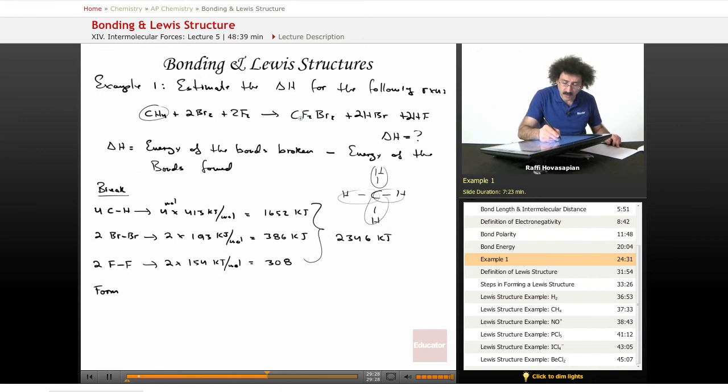Well, what kind of bonds do we form? We form two CF bonds, right? We form two CF bonds, so it's two times 485. I'm just going to write them down.